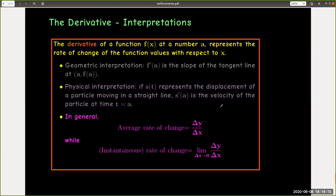In general, the average rate of change is Δy/Δx, while the derivative represents the instantaneous rate of change, which is the limit as Δx goes to zero of Δy/Δx.